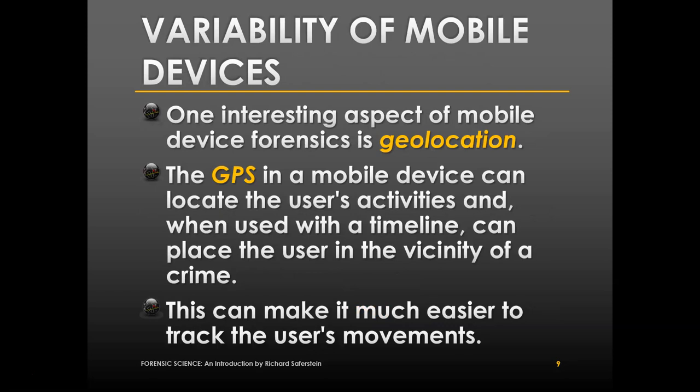One interesting aspect of mobile devices in forensics is geolocation. The GPS in a mobile device can locate the user's activities, and when used with a timeline, can place the user in the vicinity of a crime. There have been plenty of instances where people denied being anywhere near a crime, but investigators got access to their mobile phone's GPS data and were able to show they were, in fact, where that crime was taking place. This makes it super easy to track the user's movements, and most people probably have GPS location software turned on all the time.